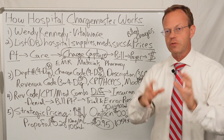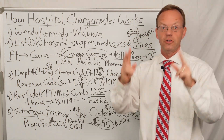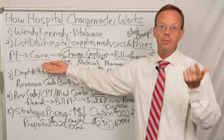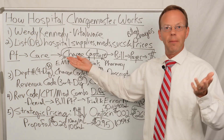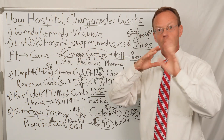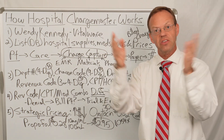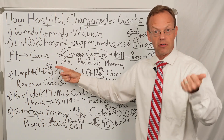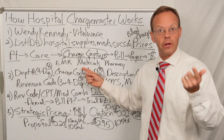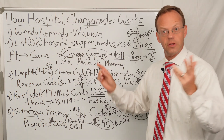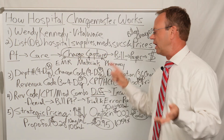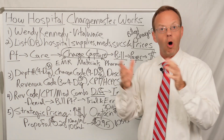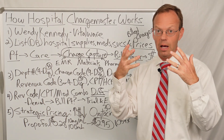Let me tell you how the charge master fits into hospital billing, or what's referred to as revenue cycle. The patient goes into the hospital for care — it could be surgery, pneumonia, etc. Then there's a process of charge capture, where they capture all the medications, supplies, and services done for that person. That charge capture pulls data from the electronic medical record, materials management for supplies, and the pharmacy for dispensed medications, and puts them all on a bill called a UB-04.